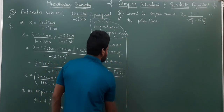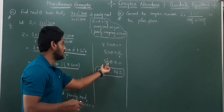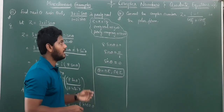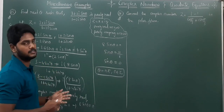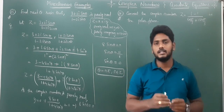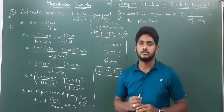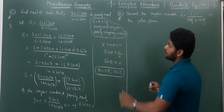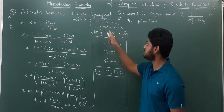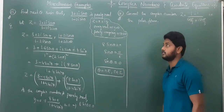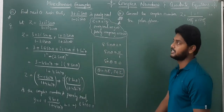We should remember that while solving math problems, multiple concepts combine — here complex numbers mix with trigonometric equations. When sin θ = 0, we use the trigonometric equation result θ = nπ. This is about the 'purely real' condition: equate the imaginary part (Y) to 0. If the question asked for 'purely imaginary', we would equate the real part (X) to 0 instead.